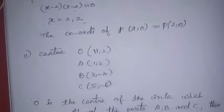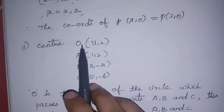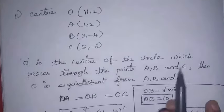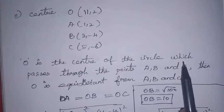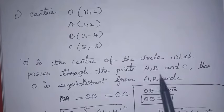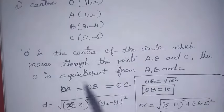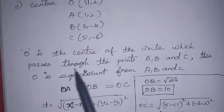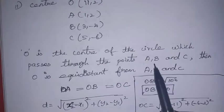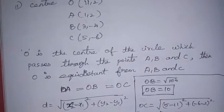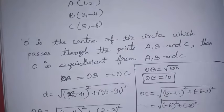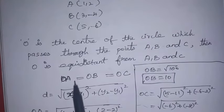Let O be the center and A, B, C be the three points on the circle. O is at (11, 2). We need to prove OA = OB = OC using the distance formula: √[(x2 − x1)² + (y2 − y1)²]. We can draw the diagram with O at center and A, B, C on the circle.